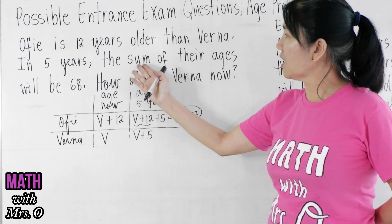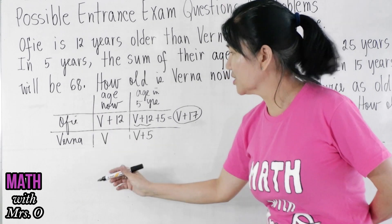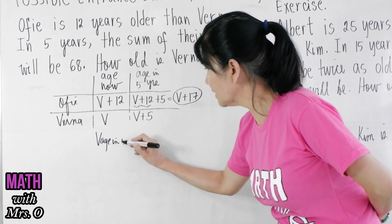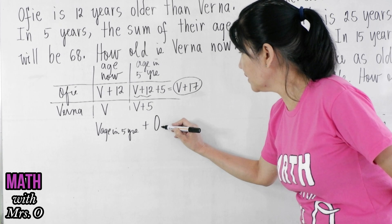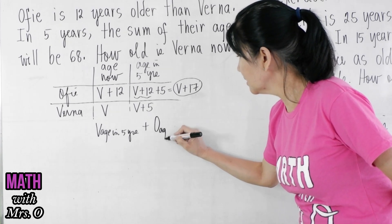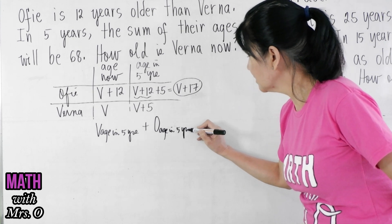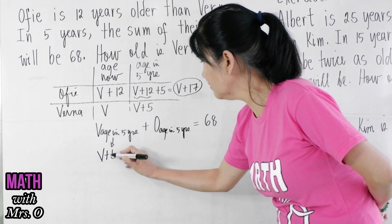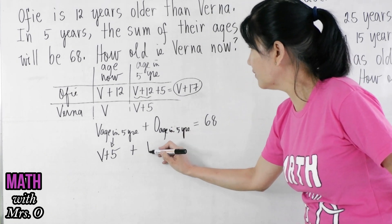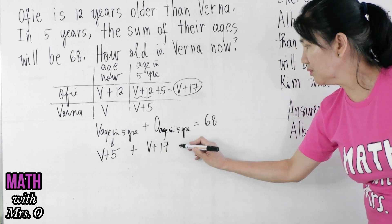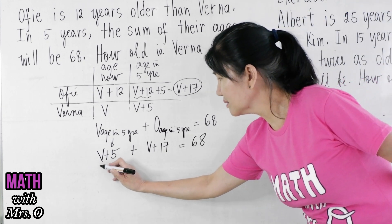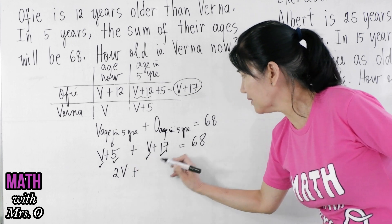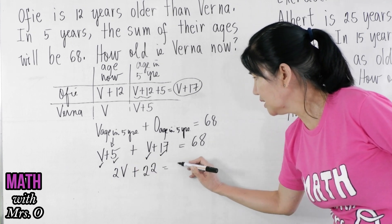Then it says here that the sum of their ages will be 68. So Verna's age in 5 years plus Ofi's age in 5 years is equal to 68. Verna's age in 5 years is V plus 5; add Ofi's age in 5 years, which is V plus 17, equal to 68. Combining like terms: 1V plus 1V gives us 2V, and 5 plus 17 gives us 22, equal to 68.